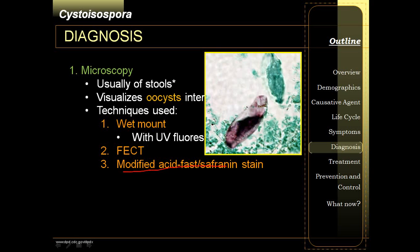Acid-fast and safranin stain would also help you stain your Cystoisospora. The shape of the cyst is cigar-shaped, or 'parang butil ng kanin.' The green one is not acid-fast — although it is shaped like a Cystoisospora cyst, that is actually a yeast cell. Only this one here is acid-fast — that is your Cystoisospora cyst.